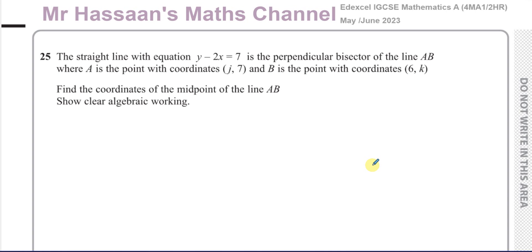This is paper A and the code is 4MA12HR. Here we're given a question about a straight line with the equation Y minus 2X equals 7, and we're told that this line is the perpendicular bisector of the line AB, where A is the point with coordinates J7 and B is the point with coordinates 6K. Find the coordinates of the midpoint of the line AB, showing clear algebraic working.